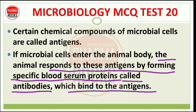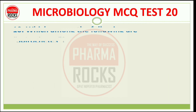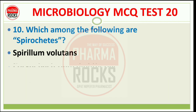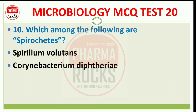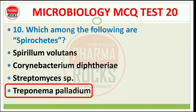Question number 10: Which among the following are spirochetes? Options: Spirillum volutans, Corynebacterium diphtheriae, Streptomyces species, or Treponema pallidum. The right answer is option D, Treponema pallidum.